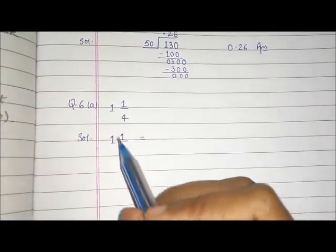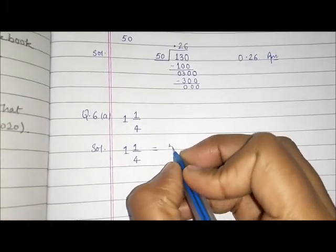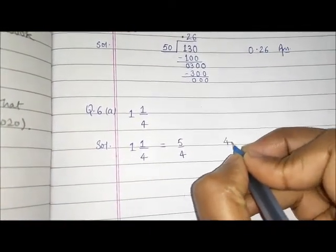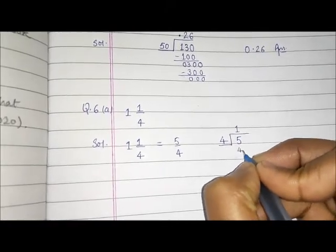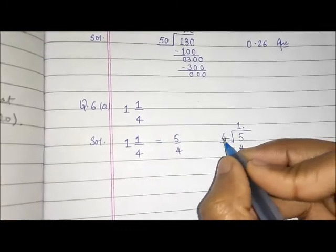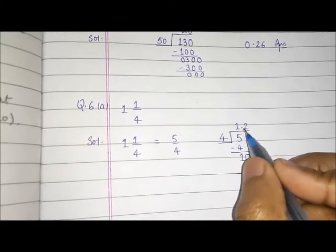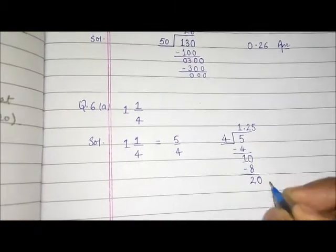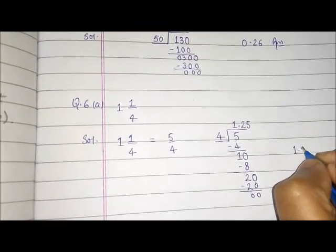In question 6, the sums are given in mixed fractions, so we will change them to improper fractions first. 4 times 1 is 4, plus 1 is 5, so it becomes 5 by 4. Now we divide 5 by 4. In the table of 4, we take 1 time 4, remainder is 1. We put a decimal point, making it 10. 4 times 2 is 8, subtract — remainder is 2. We've already put a decimal point, so we add a 0: 4 times 5 is 20. Remainder is 0 and the answer is 1.25.